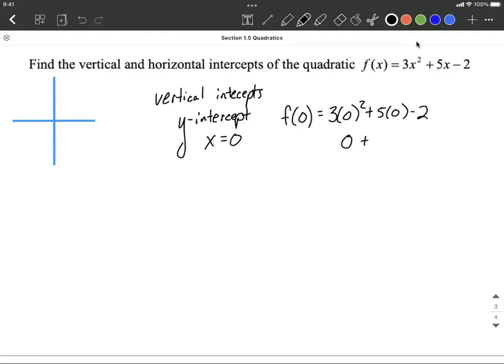So this works out to 0 plus 0 minus 2, which is going to be negative 2. So as an ordered pair, that goes 0 for your x value, negative 2 for your y value.